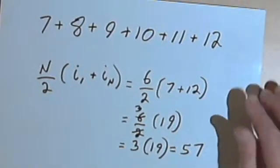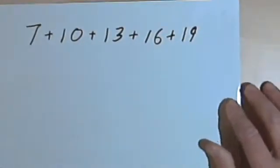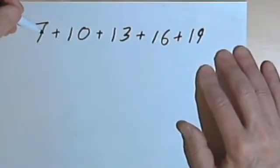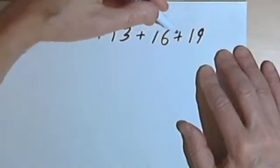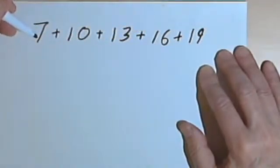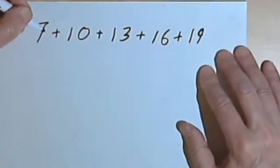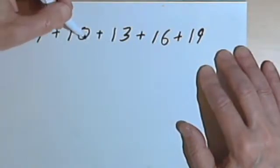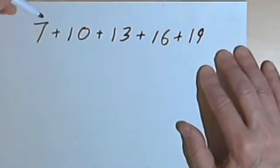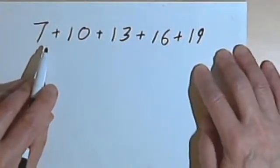Okay, so now another situation we have to deal with. Here I've got a sequence, 7, 10, 13, 16, 19. This is an arithmetic sequence because I have a common difference. I'm always adding 3 to a term in order to get the next term. 7 plus 3 is 10, 10 plus 3 is 13, and so on. So let's see how we deal with this.